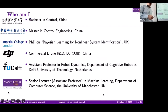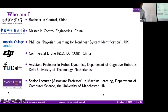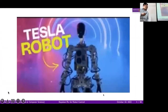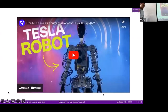I got my degree in control engineering from China and my PhD from Imperial working on system identification. Then I moved back to China to work for the drone company DJI, then to the Netherlands as assistant professor in robot dynamics. A couple of months ago I moved to Manchester as senior lecturer in machine learning. I work on robotics. Recently Tesla is working on a humanoid robot — let's see what happened. Elon Musk is pretty happy with the product, but we're not that impressed because someone has to hold it and the humanoid robot is not working autonomously.